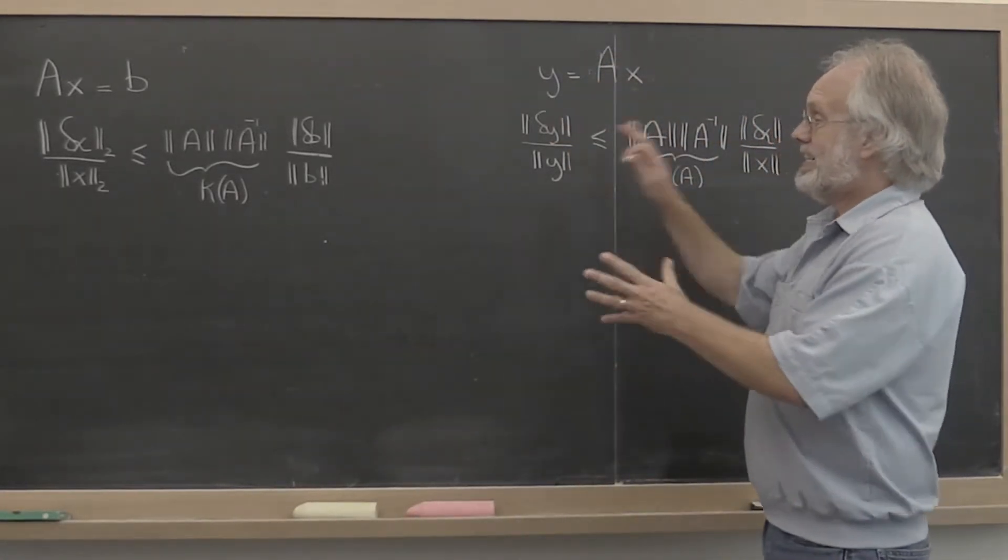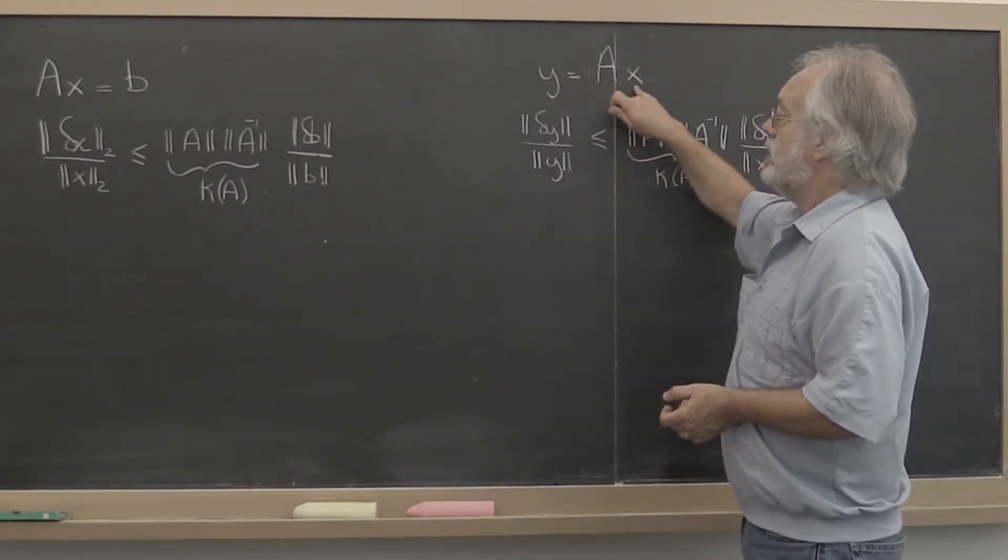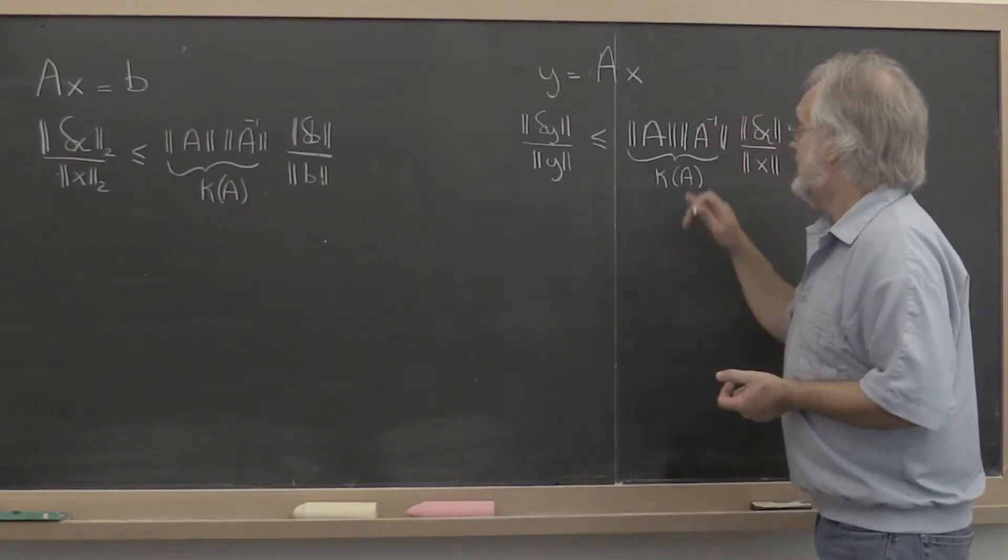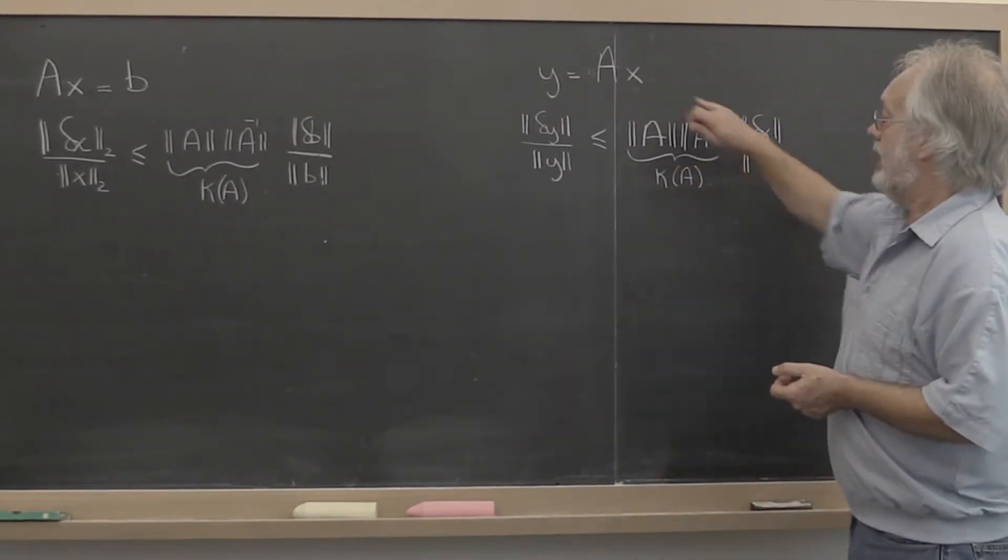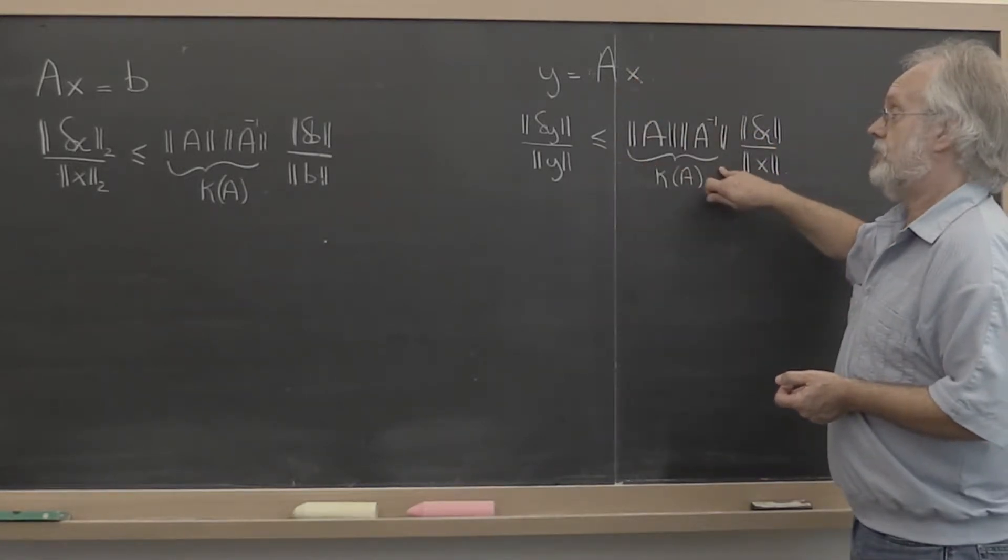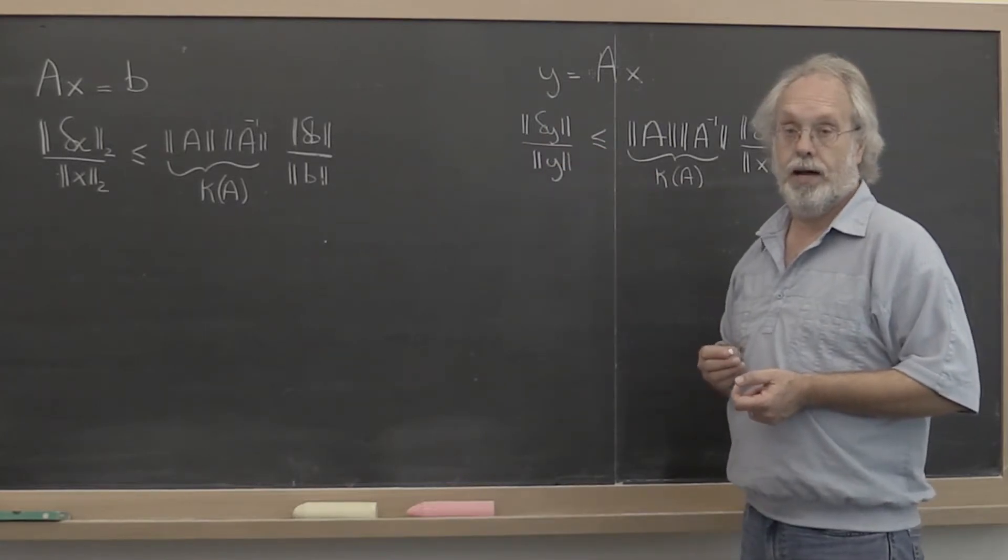You can do the exact same thing when you do y equals A times x. What you're going to see in a homework for this unit is that the relative error in x that goes in is at most amplified by the condition number of A into a relative error in Y.